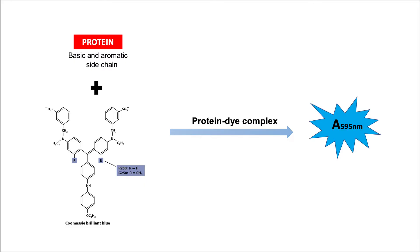These hydrophobic pockets in the protein's tertiary structure bind non-covalently to the nonpolar region of the dye via hydrophobic interaction, which positions the positive amine groups in proximity with the negative charge of the dye. The bond is further strengthened by ionic interaction between the two. When the dye binds to protein, it causes a shift from 465 nm to 595 nm, which is why the absorbance readings are taken at 595 nm.